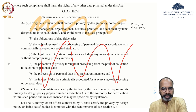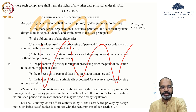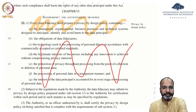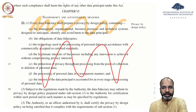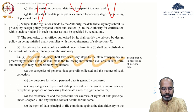Every data fiduciary shall prepare a privacy by design policy containing managerial, organizational, business practices, and technical systems — obligations of the data fiduciary, technology used in processing, legitimate business interest including innovation, protection of privacy, and the interest of the data principal accounted for at every stage of processing. These are very relevant details for having protection of personal data collected from the principal. Privacy policies are one way companies can express what they're doing, which we've already seen in detail earlier in this course.